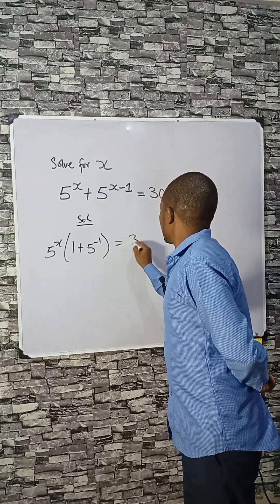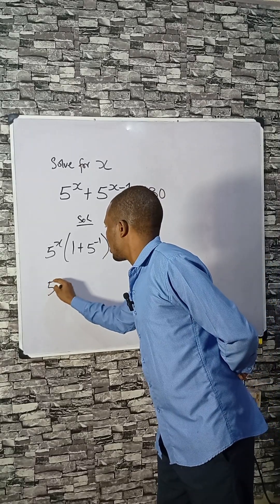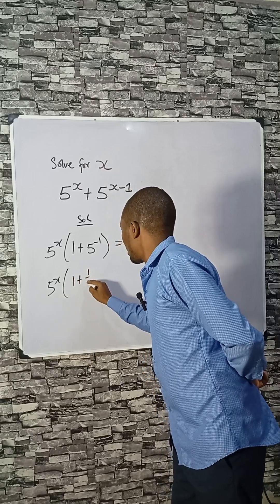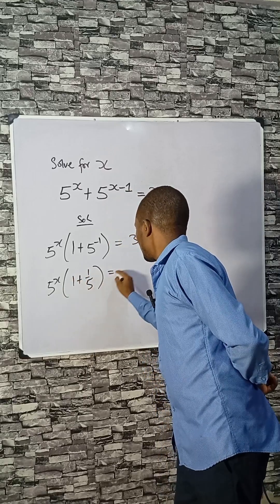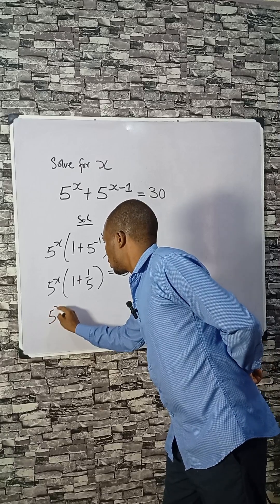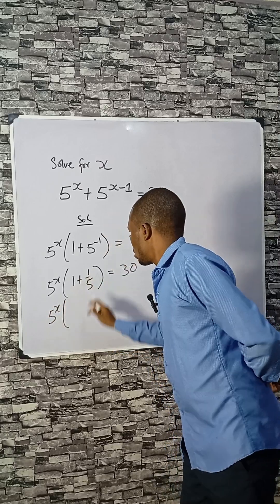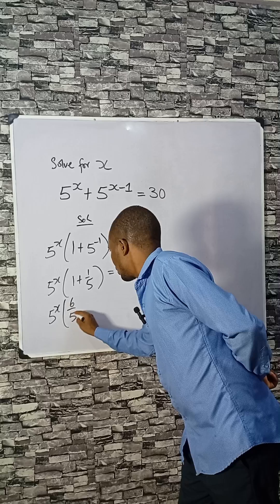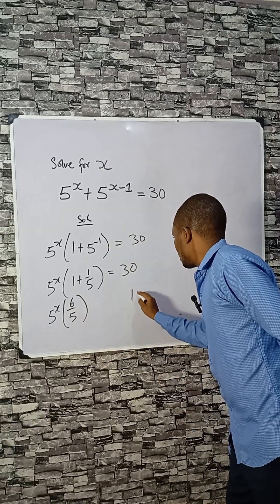This equals 13. So 5^x times (1 plus 1 over 5) equals 13. Now 1 plus 1 over 5 is 6 over 5.